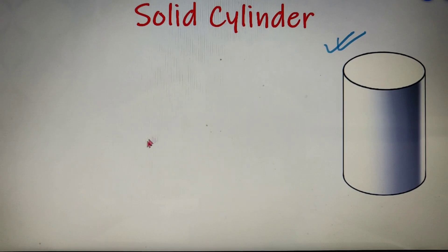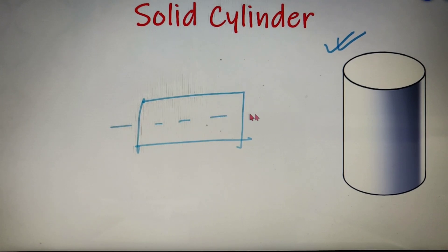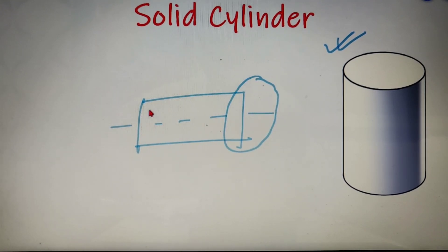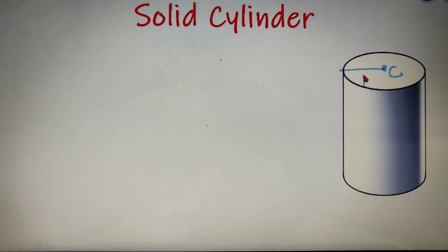In simple words, what the definition is trying to say is that if you have a rectangular lamina and you rotate it about its central axis, you will get a solid cylinder. If I name this point as C, then the distance between C and the endpoint is called the radius of the solid cylinder.